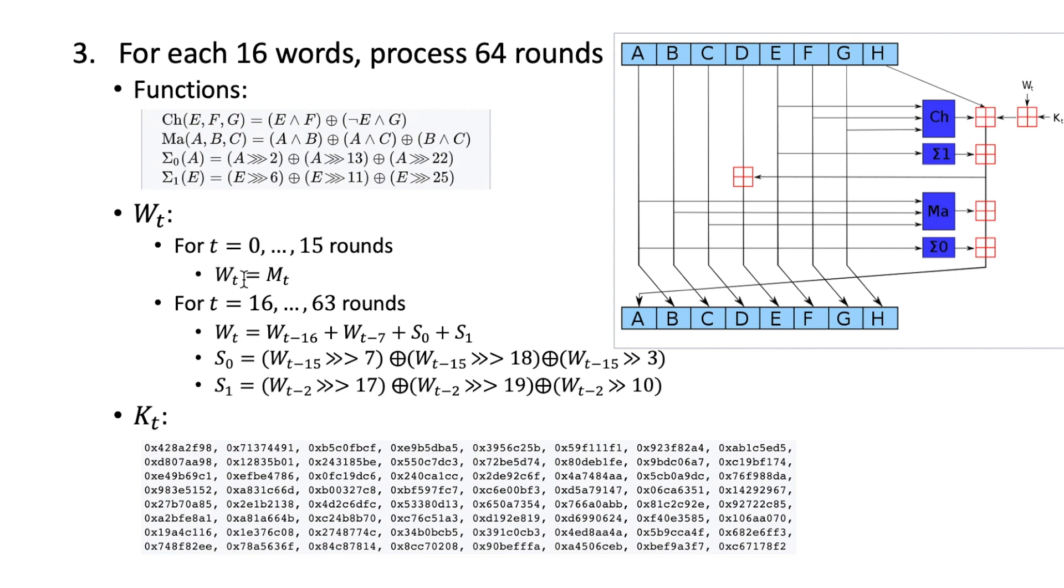After this first 16 rounds, the value in Wt will be different. It's the result of W(t-16) plus S0 plus W(t-7) plus S1.